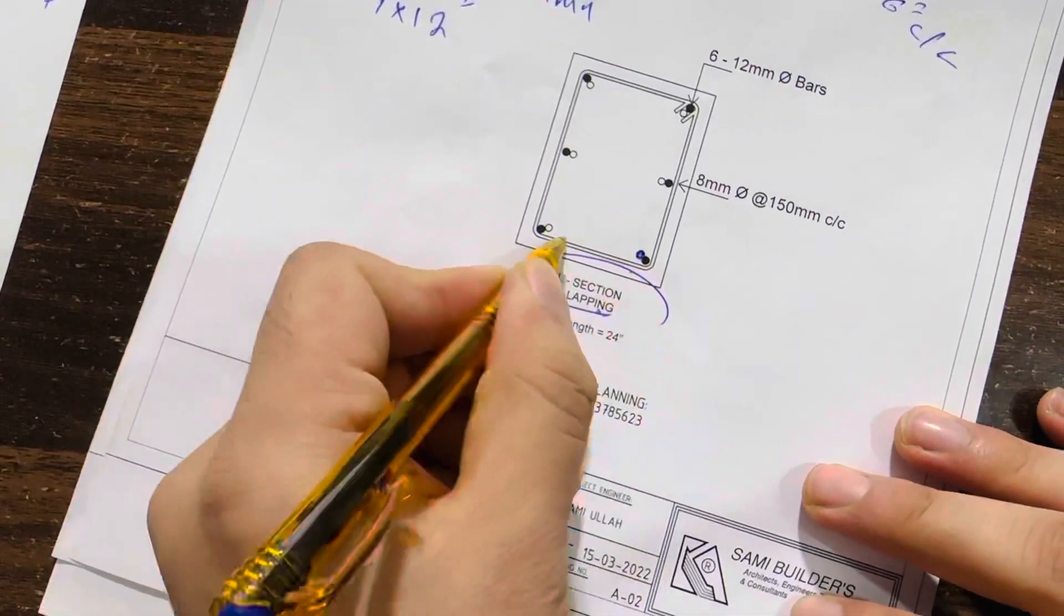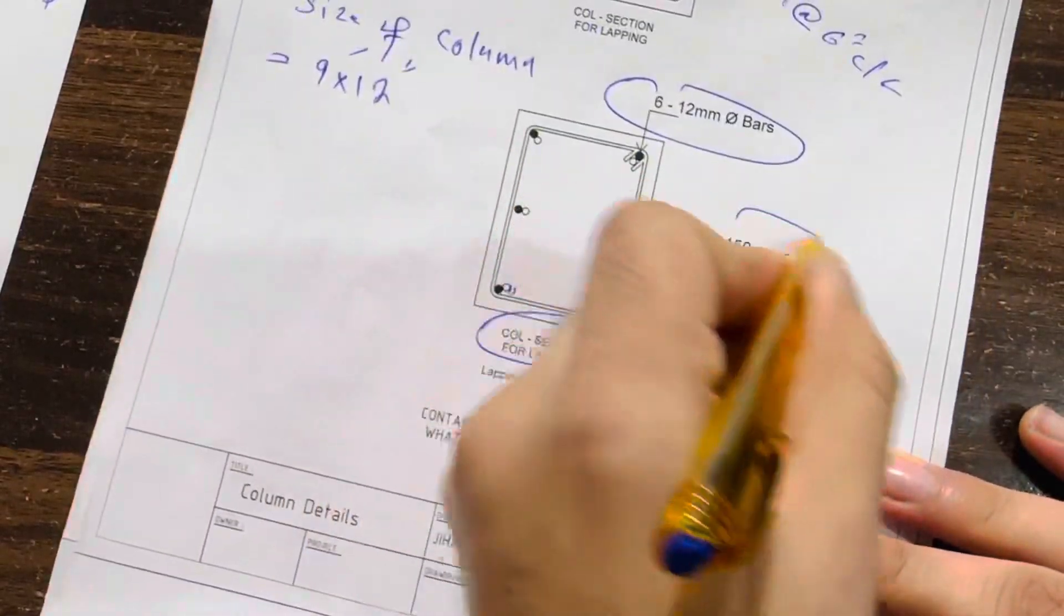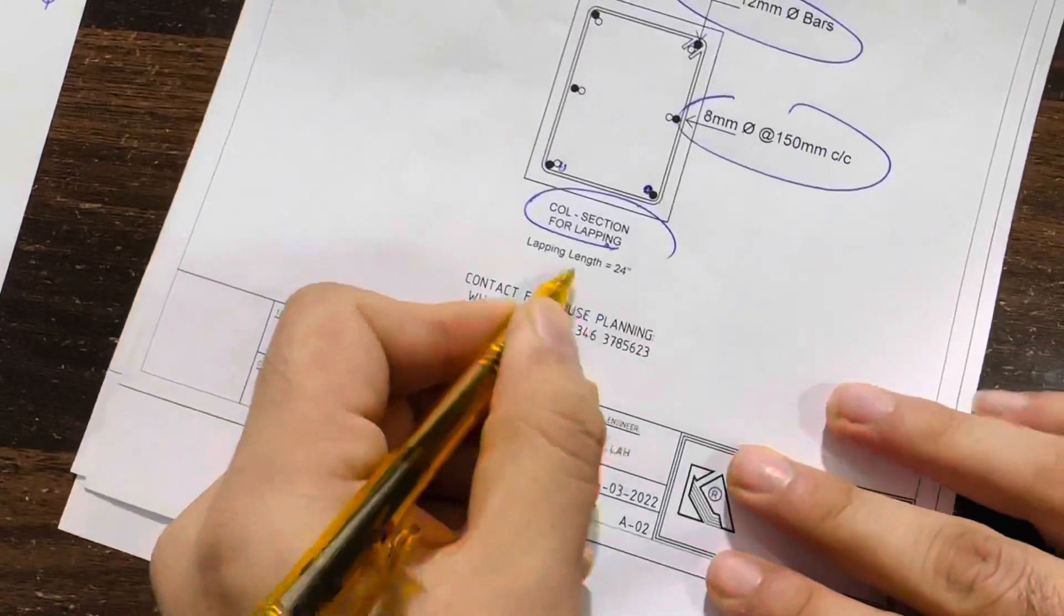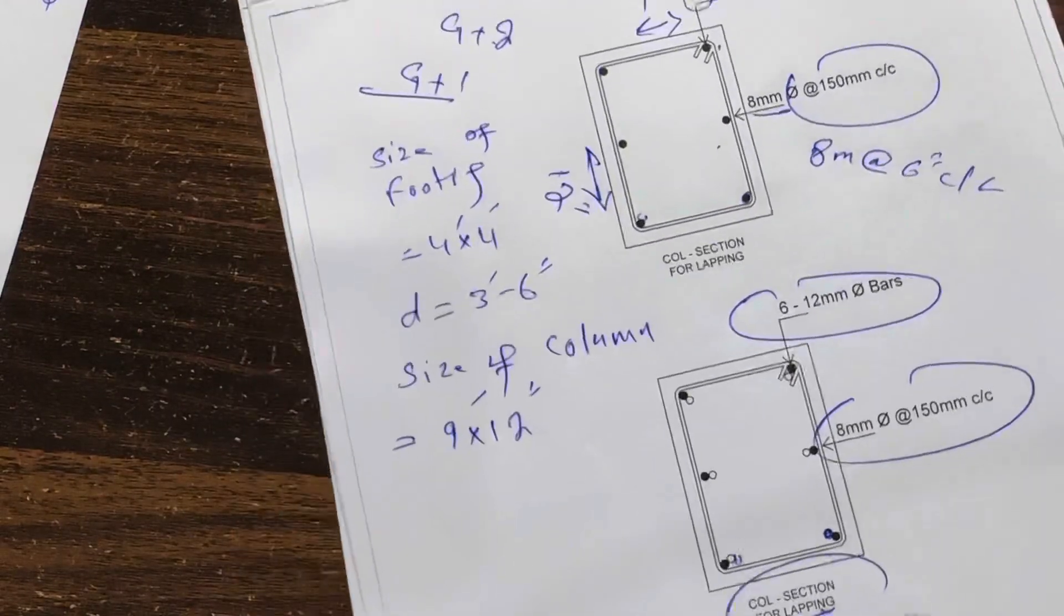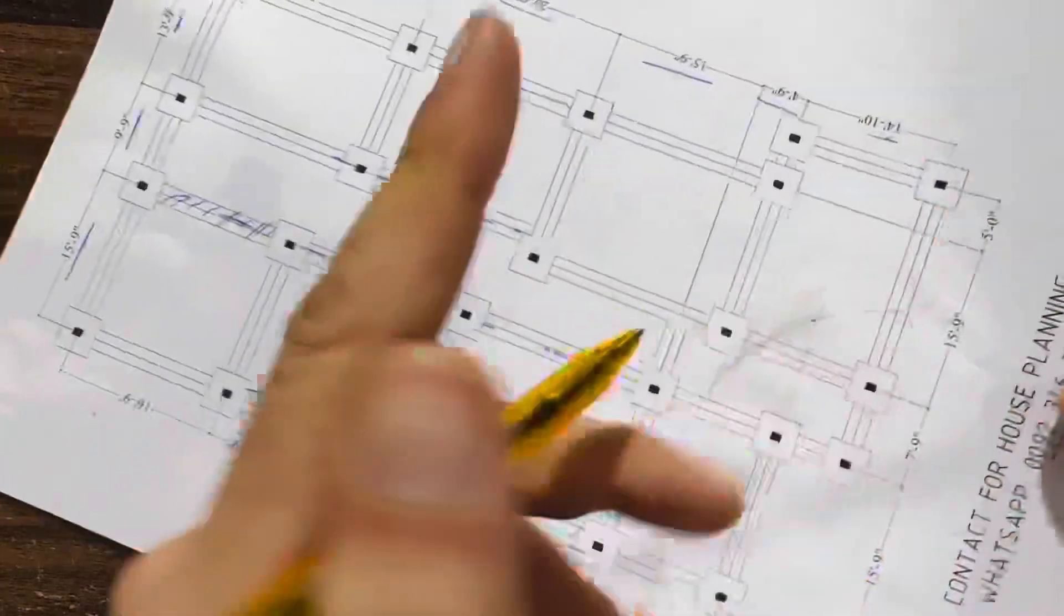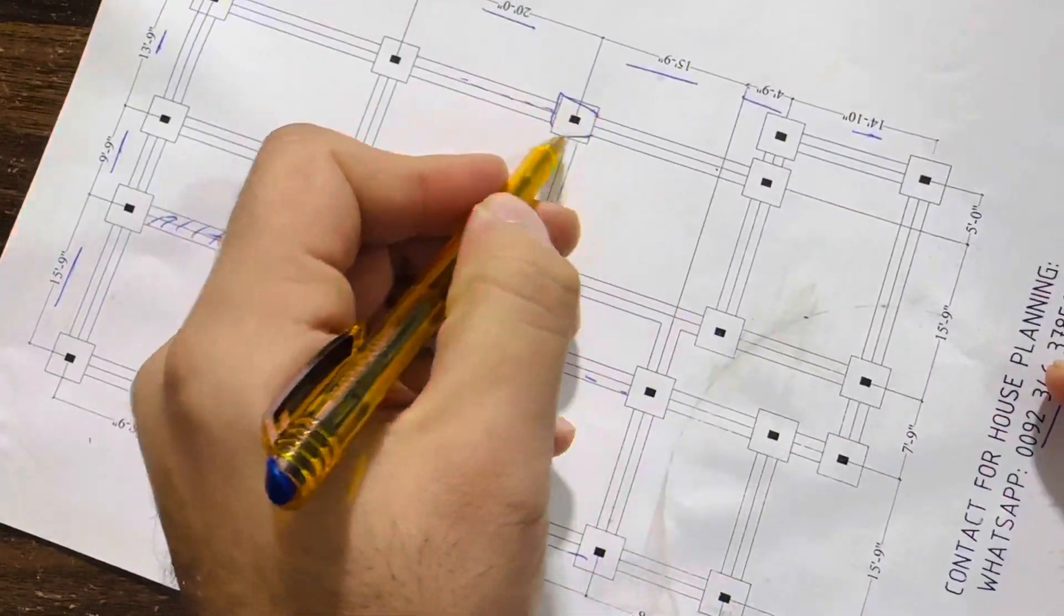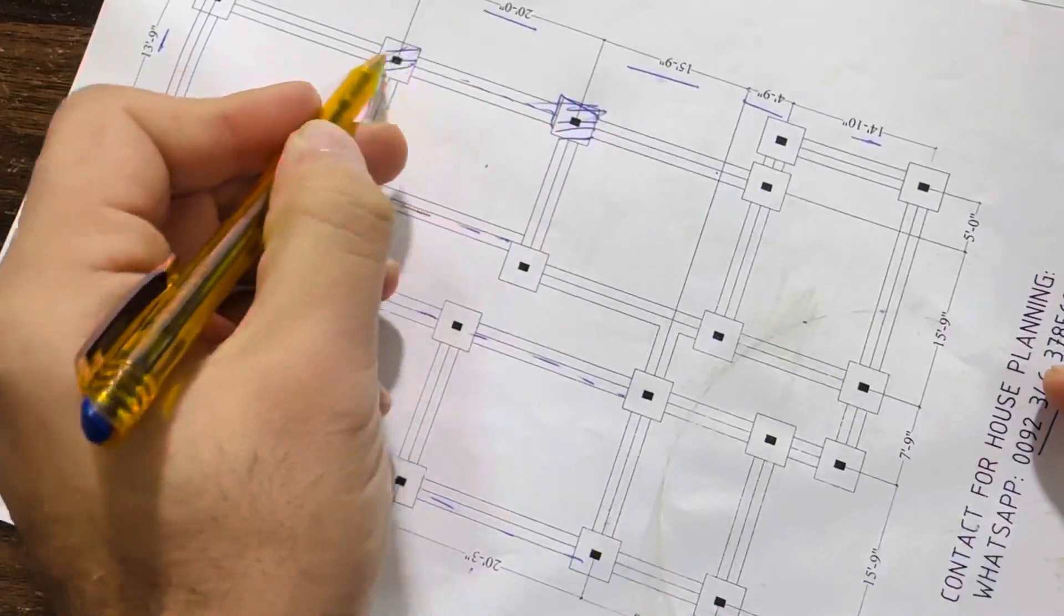You can see the column section for the lapping. It can show you the lapping, so the size is same for the steel reinforcement. Only you can see here the lapping length is 24 inches for this column. This is its size and this is the layout plan inside the footing.